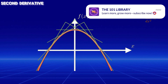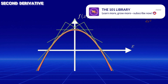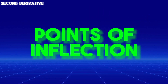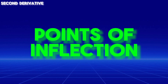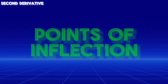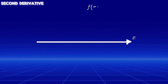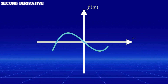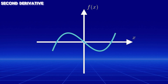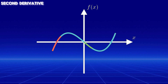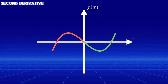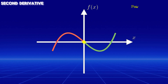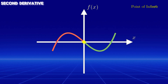Understanding concavity also highlights the importance of points of inflection. A point of inflection occurs where the graph changes from concave-up to concave-down, or vice versa. Mathematically, this happens where the second derivative equals zero.